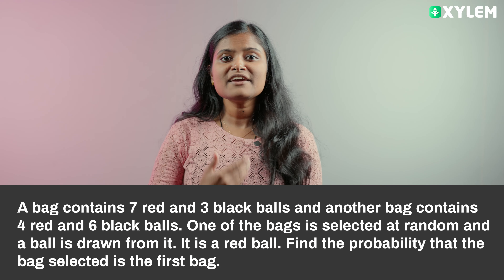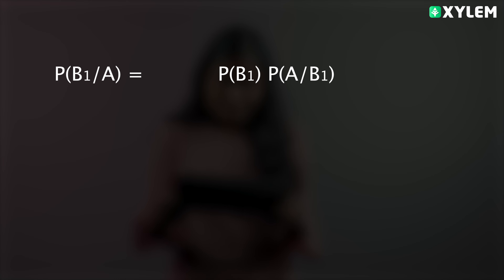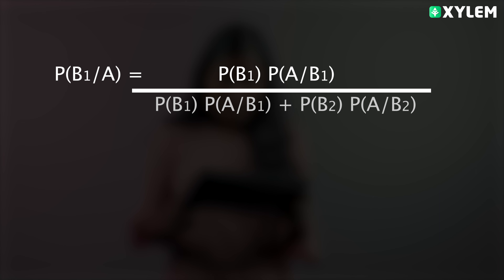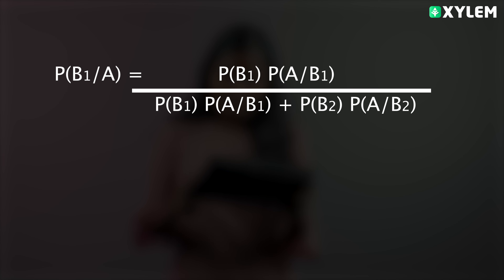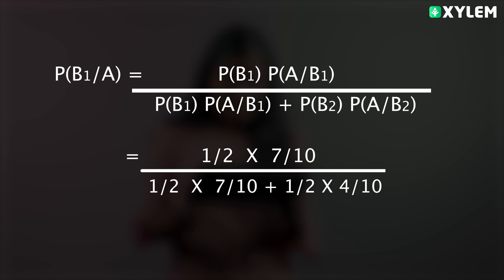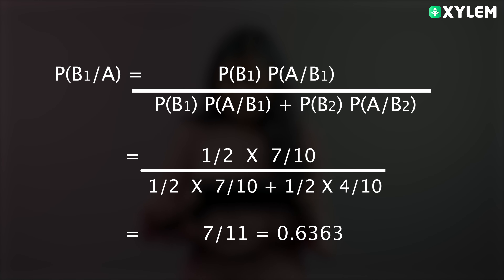We need the probability of B1 given A. Using Bayes Theorem: probability of B1 given A equals probability of B1 multiplied by probability of A given B1, divided by probability of B1 into probability of A given B1 plus probability of B2 into probability of A given B2. That is equal to 1/2 × 7/10 divided by (1/2 × 7/10 plus 1/2 × 4/10), which equals 7 by 11, that is 0.6363.